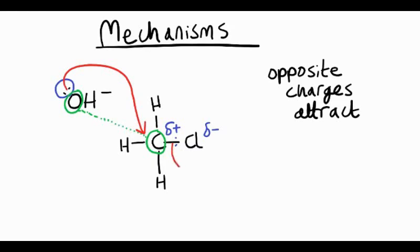And then in a second curly arrow, we draw from halfway through the C-Cl bond to the chlorine, which shows a bond breaking. The thing to remember is both of those happen at the same time.